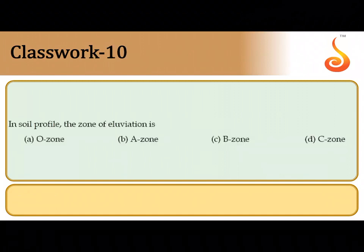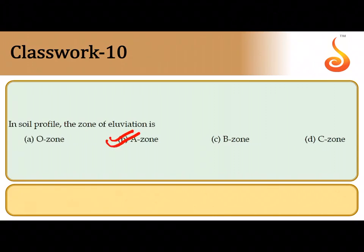In a soil profile, the zone of eluviation is where minerals present in that area get leached — carried away to the bottom layers of the soil. The zone where minerals undergo maximum leaching is the A horizon, which represents the fertile topsoil layer. The correct answer is option B.